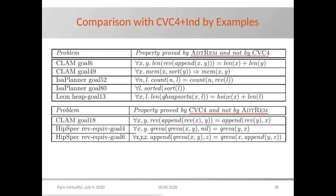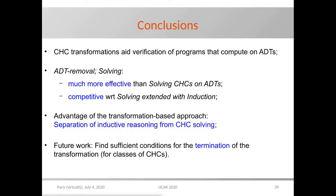To wrap up, we have seen that constraint horn clause transformations can aid in verifying programs that compute on algebraic data types. Our experimental evaluation shows that ADT-REM substantially improves standard techniques for CHC solving, and that ADT-REM followed by state-of-the-art CHC solvers is competitive with extending CHC solving by induction. The advantage of the transformation-based approach is that we can separate inductive reasoning from constraint horn clause solving. As a final remark, in this work we have only proved the soundness of the transformation; there are many other theoretical properties to be studied, and in particular it would be interesting to find sufficient conditions for termination.